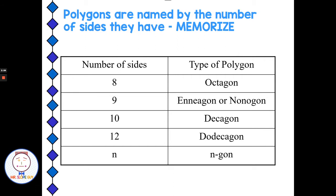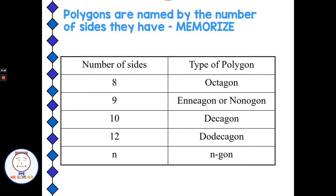Normally we just go by the number and the word 'gon,' so we call that an n-gon. We could have a 13-gon, a 27-gon, a 58-gon — we just call it by the number of sides. The most common ones you'll need to know the names of. You will run into those on tests, quizzes, ACT, SAT, so you're going to need to know the common ones.